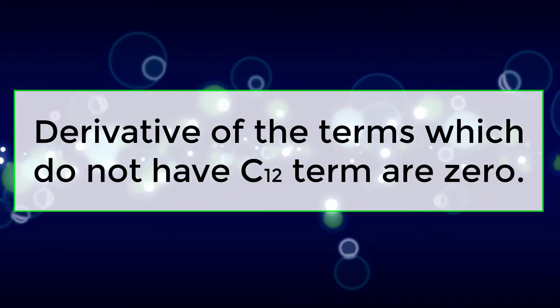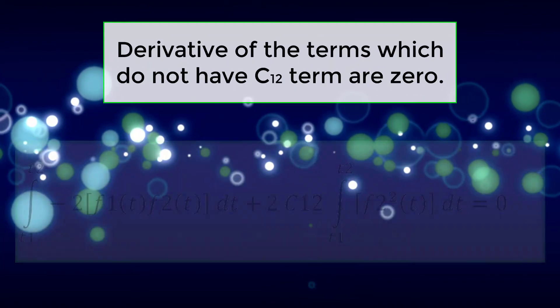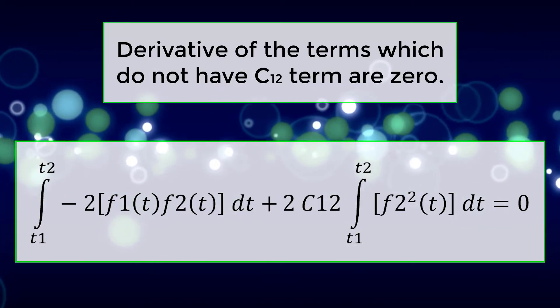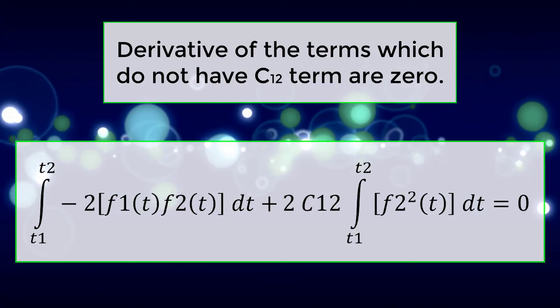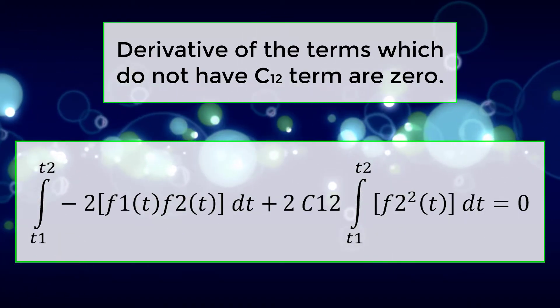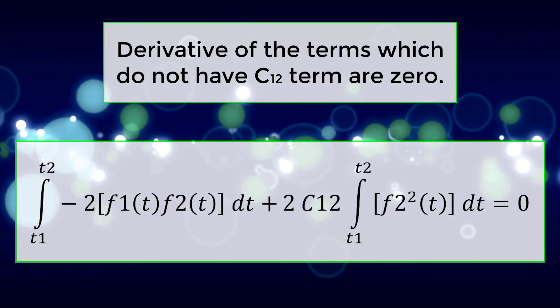Derivative of terms which do not have C12 term are zero. Integral t1 to t2 of [-2f1(t)f2(t)] dt plus 2C12 into integral t1 to t2 of f2^2(t) dt equals zero.